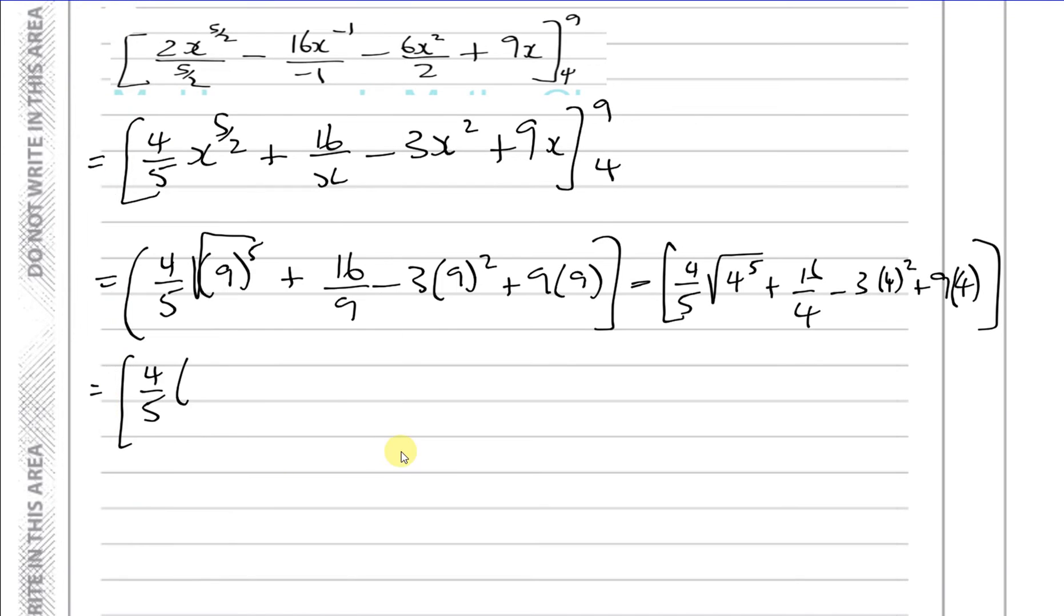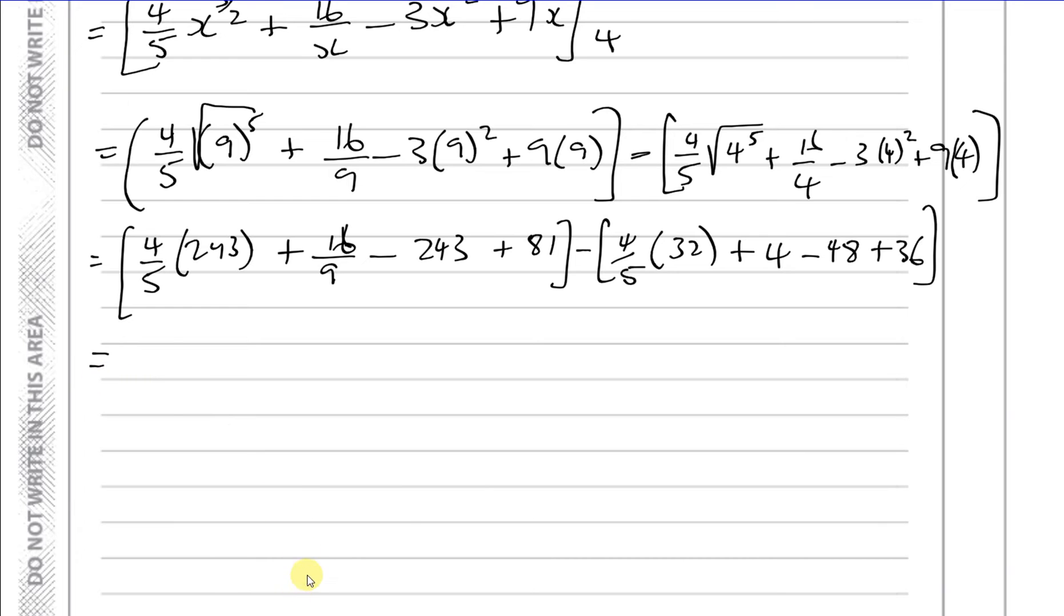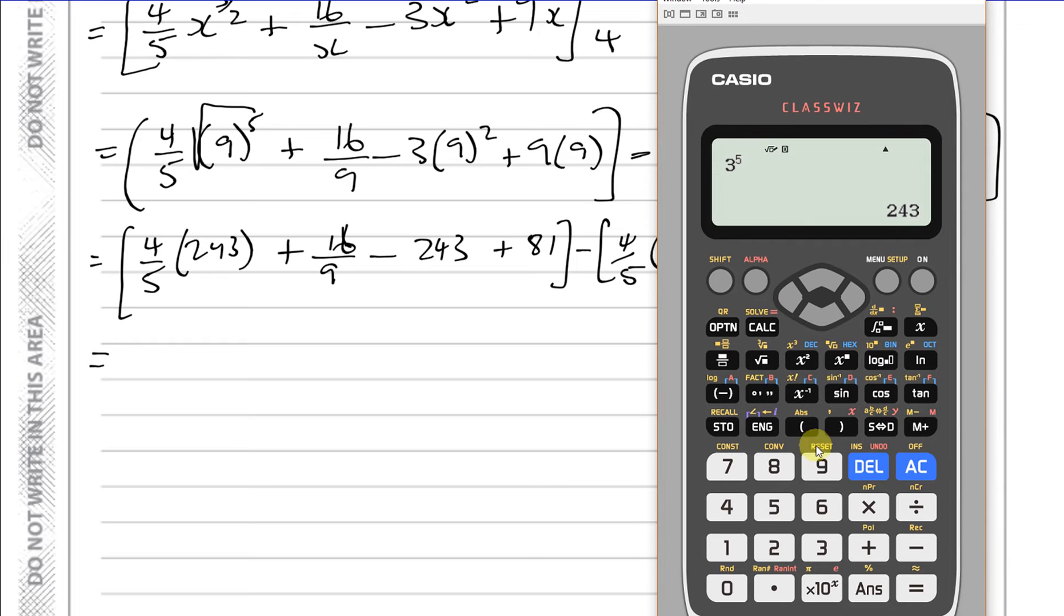So let's see what that gives us. That's going to be 4 fifths times the square root of 9 is 3, 3 to the power of 5. 3 to the power of 5 is I think it's 243. 243 plus 16 over 9 minus 3 times 81 which is also 243 plus 9 times 9 which is 81. Minus and you're going to have 4 fifths times the square root of 4 is 2, 2 to the power of 5 is 32. 16 over 4 is 4 minus 3 times 16 which is 48 plus 9 times 4 which is 36.